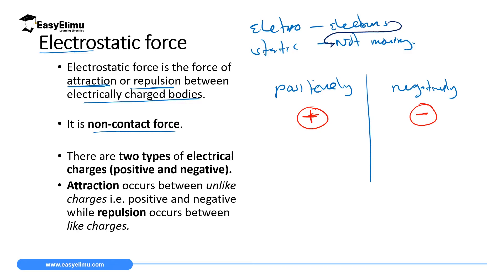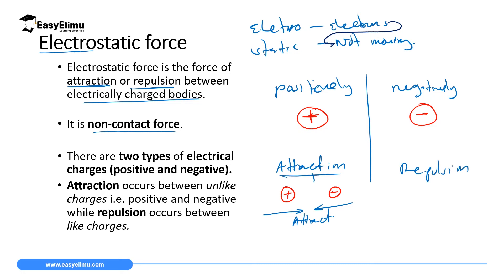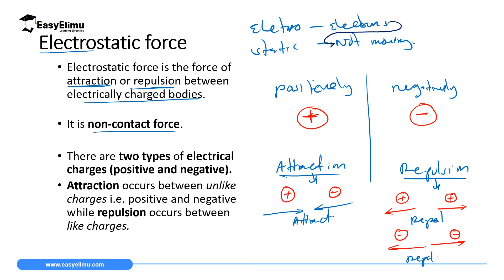Attraction occurs when you have opposite charges — a positive and a negative charge will attract or pull each other. Repulsion takes place when you have the same charges: a positive and a positive will repel each other, and a negative and a negative will also repel each other.